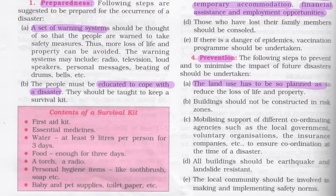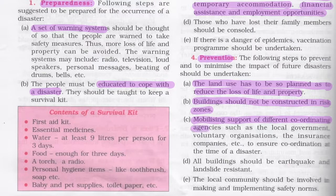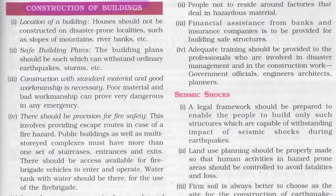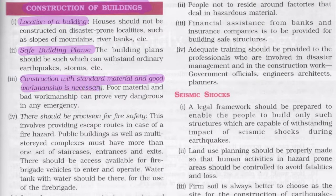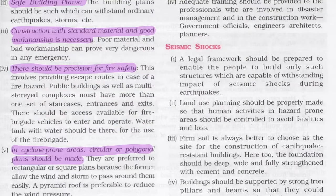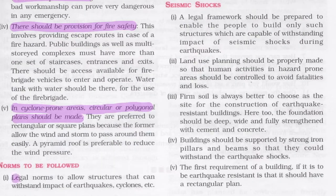Prevention steps include planning land use to reduce loss of life and property, not constructing buildings in risk zones, mobilizing support of coordinating agencies, ensuring all buildings are earthquake- and landslide-resistant, and involving local communities in making and implementing safety norms. When constructing buildings, factors to check include location, safe building plans, standard materials and good workmanship, fire safety provisions, and in cyclone-prone areas, circular or polygonal plans should be used.